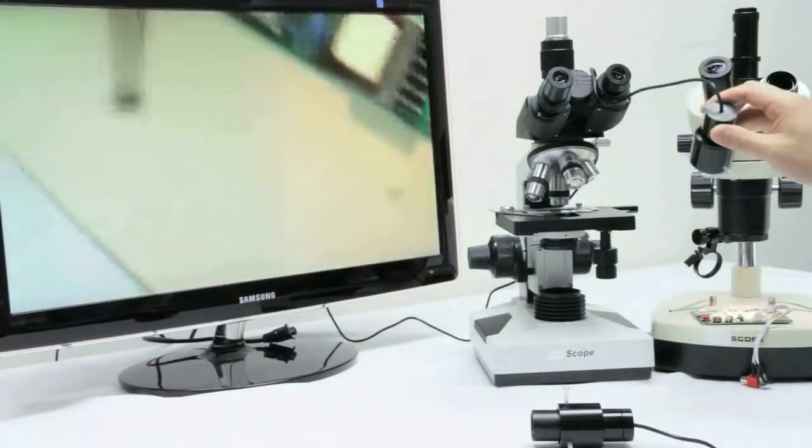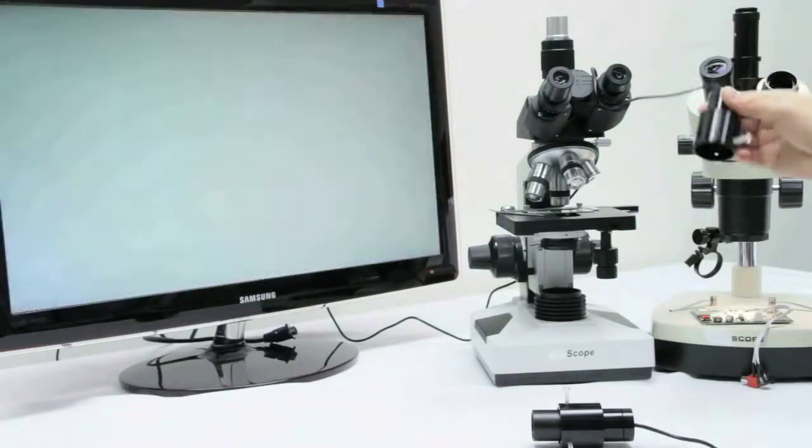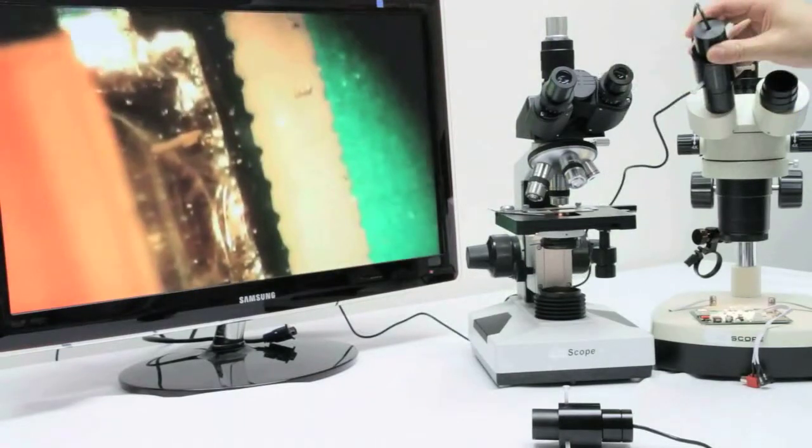Just as an example, we can remove the eyepiece camera from the microscope and show how the camera works. This won't really have a focus, but you can see how it works. You can see the right focus if you are on the microscope correctly.